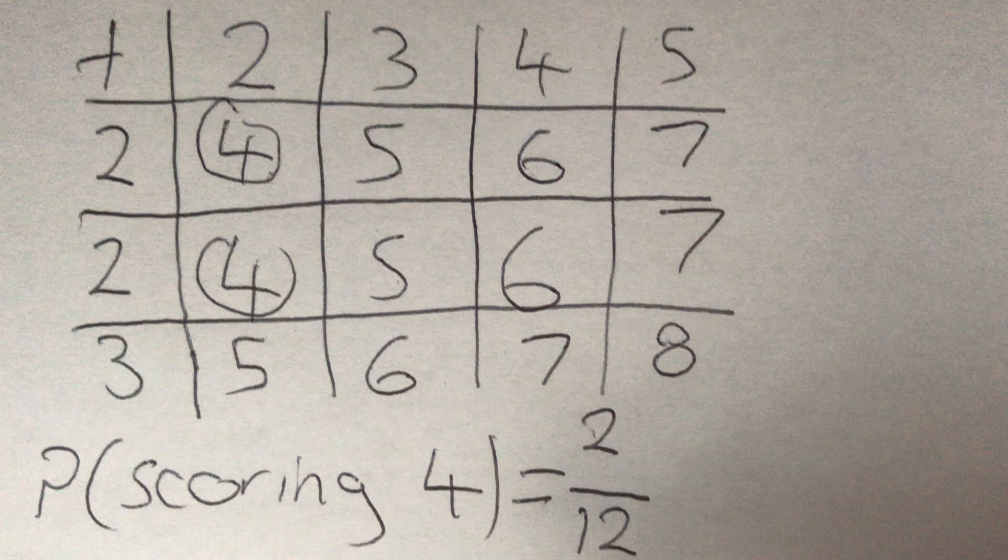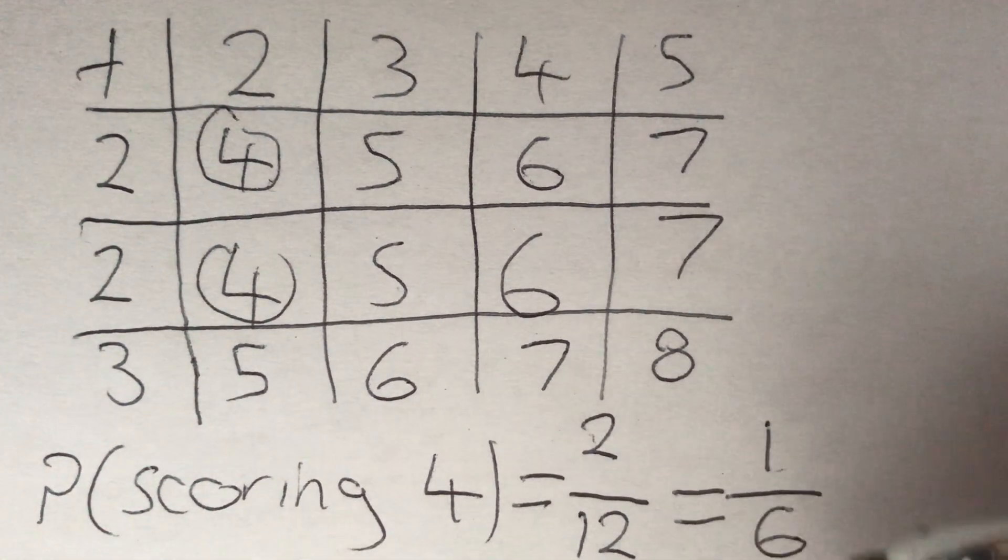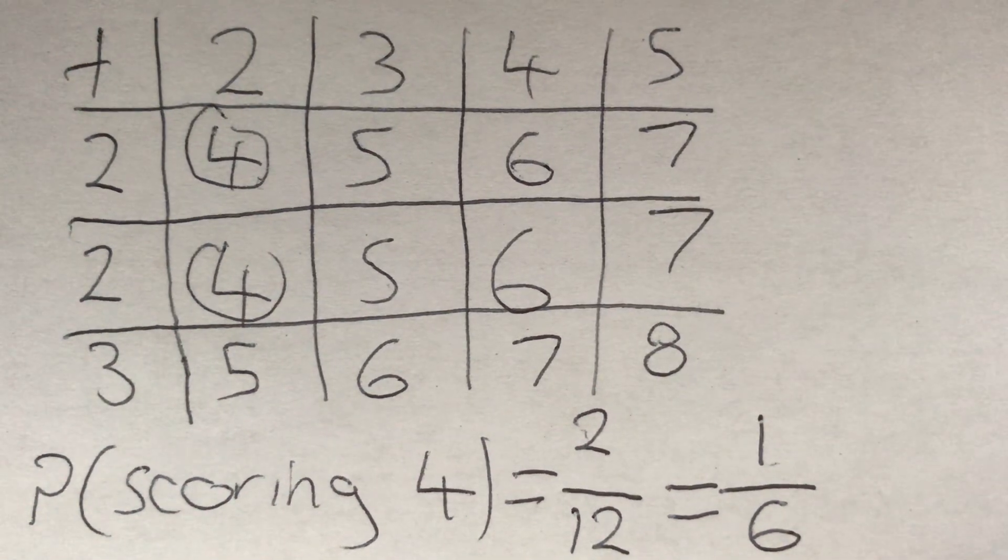This is our fraction, but it's not quite simplified yet. We can divide both top and bottom by 2. So our probability is going to be 1 sixth. And that is our answer.